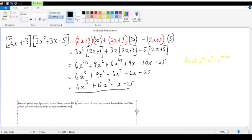In the next video, you will see how this problem is work vertically. Again, key point here. That to multiply one polynomial by another, we multiply each term of one polynomial by each term of the other polynomial. And then, combine like terms. That is what we did here.